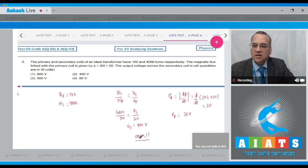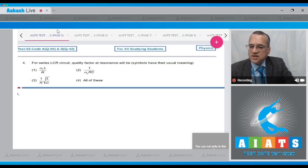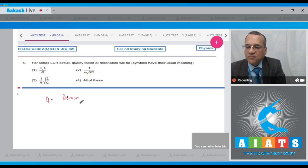Let us move to the fourth problem. Question number 4 says that for series LCR circuit, the quality factor at resonance will be, the symbols have their usual meanings. These are the four options. Dear students, we know that the quality factor is equal to the resonance frequency divided by the bandwidth.